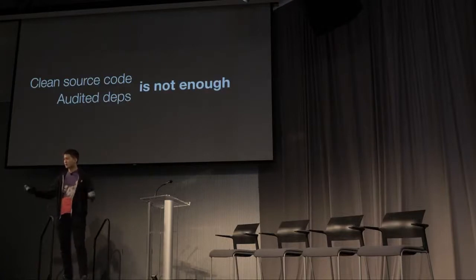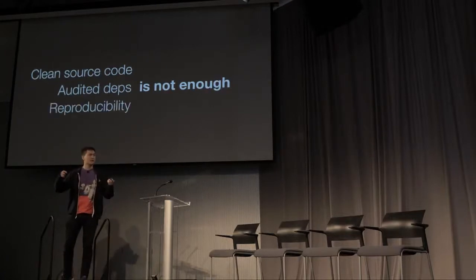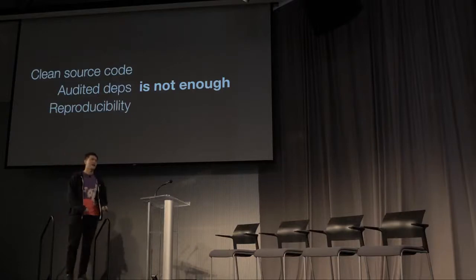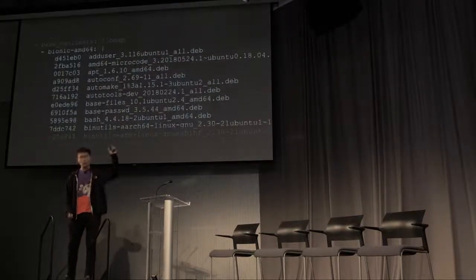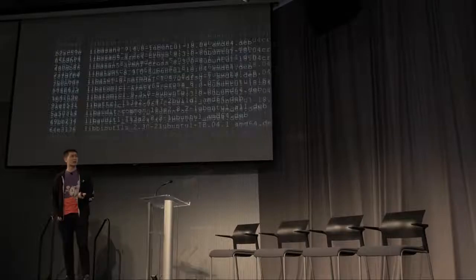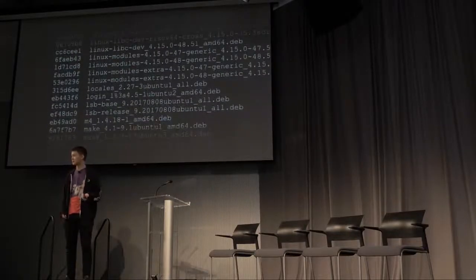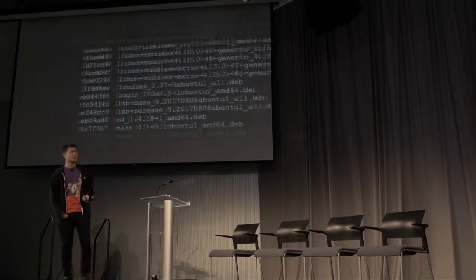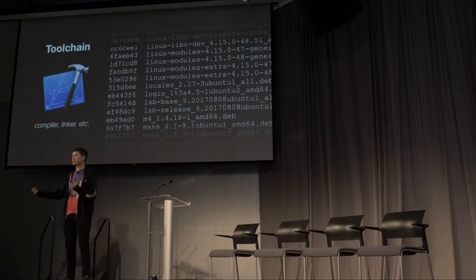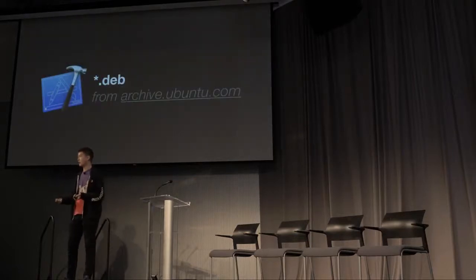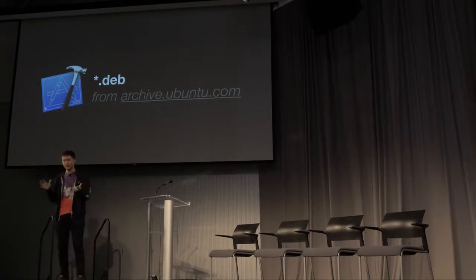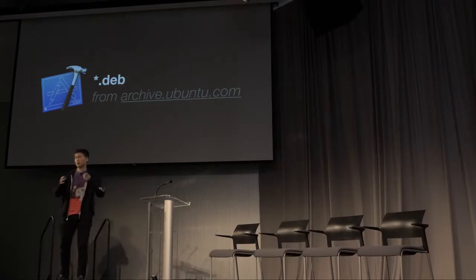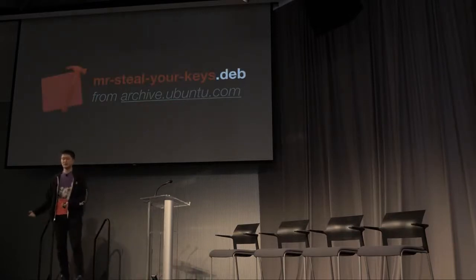Okay, so we have reproducibility. Is reproducibility enough? I'm here to tell you that reproducibility is still not enough. If you go look at the .assert files and scroll down a little bit, you will see quite a long list of dependencies that we still depend on — those constitute our toolchain and our build environment. These are basically .deb files that we download from Ubuntu servers that we just have to trust as an opaque blob. We have no idea if these are the tools we expect them to be or something that's going to steal your keys.